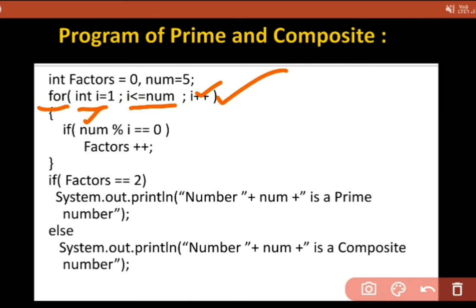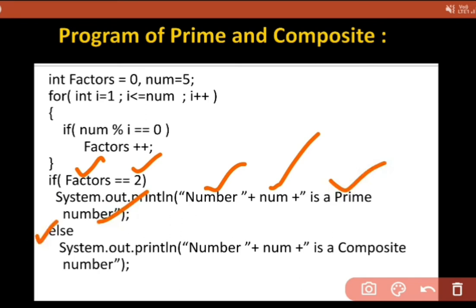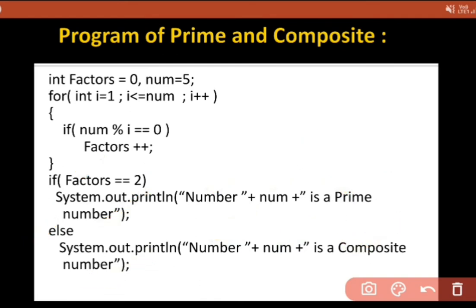I'm checking whether the number is divisible by each value and counting how many numbers divide it. If factors equals 2, I print that the number is prime. If it has more than 2 factors, I print that it is a composite number. In this way you can write this program and place it wherever it is needed.